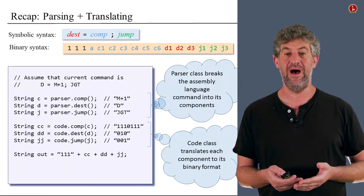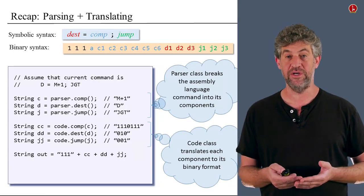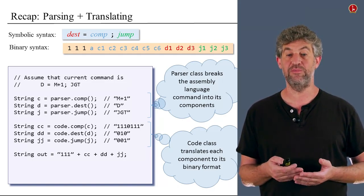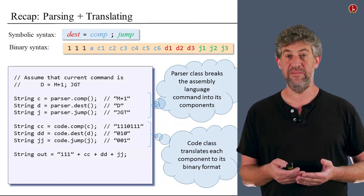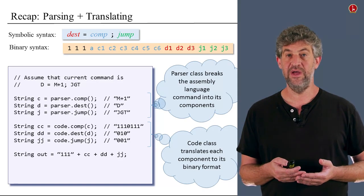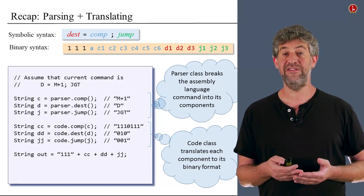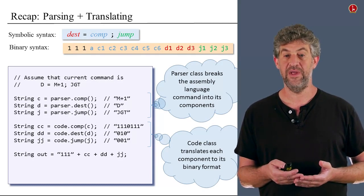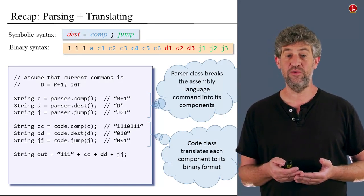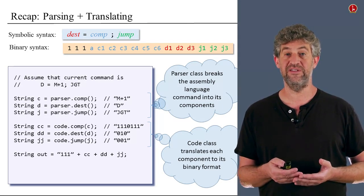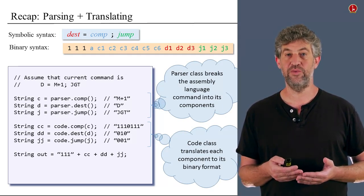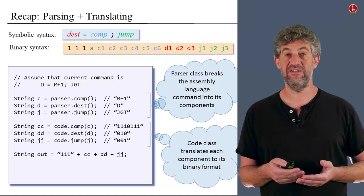Let us see an example of how to use the parser object and the code object to actually do that translation. The parser object gives us access to each one of the parts — for example, the computation, destination, and jump parts. We take each one and ask the parser to give us the string that corresponds to each piece. Once we have these three strings, we go to the code object and ask it to translate each one separately according to its table. We then concatenate all of them together with the three leading ones, giving us a complete translation from assembly language to a string of binary bits.